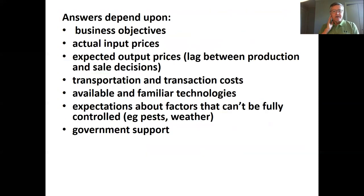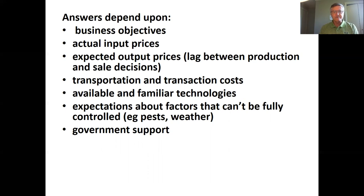There's a resource from North Dakota State University on production theory that I recommend if you want more detail on production economics. These decisions depend upon: what is the objective of the farming operation — is it purely profit or something else? What are the actual input prices? Farmers can mostly observe those prices with some clarity at the beginning of the year, but they're not going to sell their product for at least three to four months, so what prices might they get in the future? They also have to think about the transportation costs of moving inputs to their farm or moving a product to different markets.